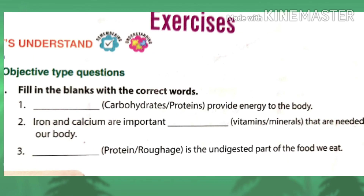Hello dear students, now that you have understood Chapter 2 - Food and Health, we will solve the exercise. We will start with the objective types. First is filling the blanks. The first blank: this provides energy to the body. The answer is carbohydrates.